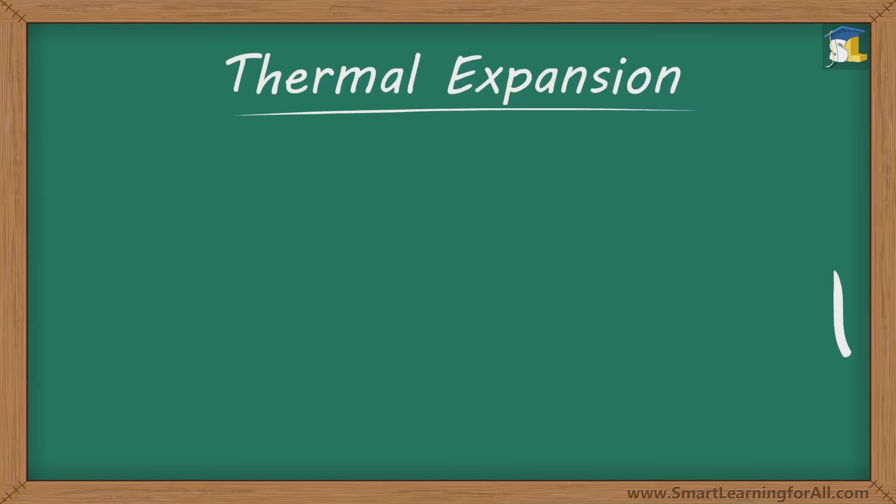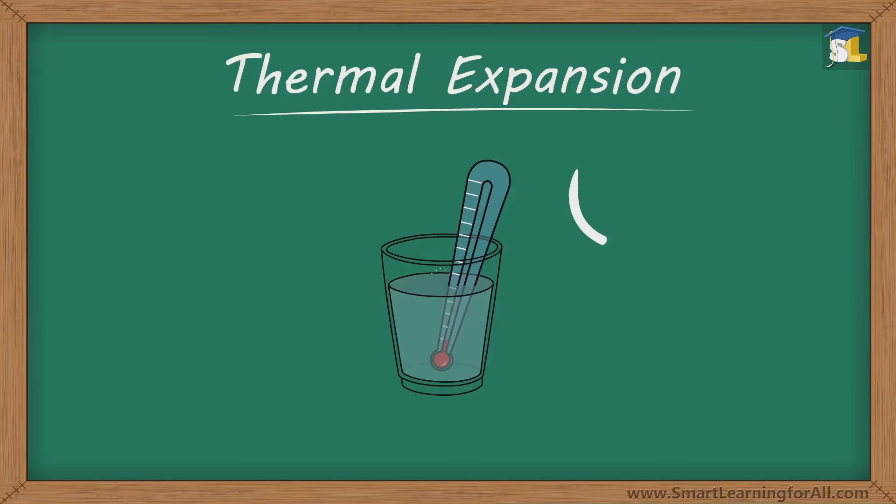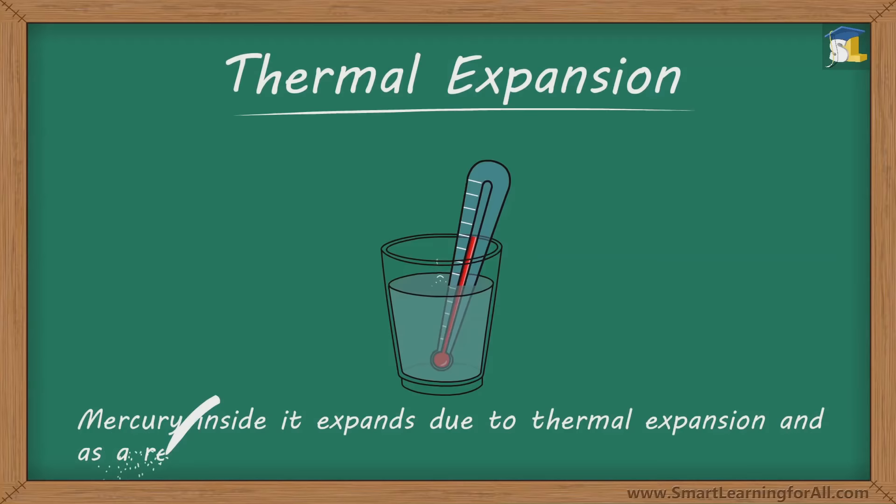Now, let us see how this concept of thermal expansion applies to a thermometer. A thermometer usually consists of a narrow tube with a small bulb at its one end. The bulb and a part of the narrow tube is filled with mercury, which is liquid at room temperature. Now, when a thermometer is placed in hot water, mercury inside it expands due to thermal expansion, and as a result, its level rises.